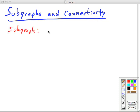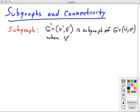This is when g prime is a subgraph of g when v prime is a subset of v and e prime is a subset of e. So it just means that g prime's vertices and edges are subsets of g's vertices and edges. A graph is connected, in the undirected case, if every vertex is reachable from all other vertices.